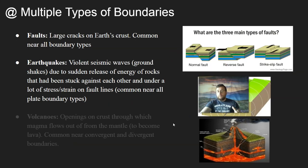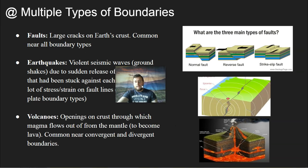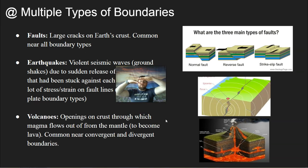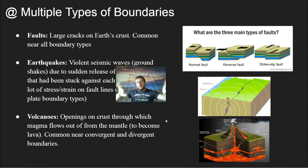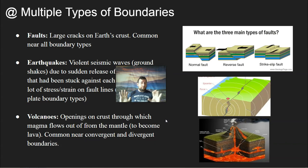Volcanoes tend to be more common in divergent and convergent boundaries. At a convergent boundary, a plate melts as it sinks underneath, and that melting plate pushes through the other plate causing a volcano. You also have divergent volcanoes, where lava seeps between the separating plates. There are also hotspot volcanoes that happen away from boundaries, but for the context of plate tectonics we focus on divergent and convergent volcanoes.